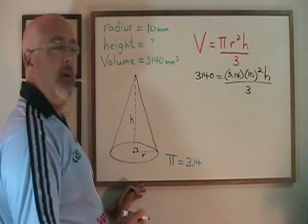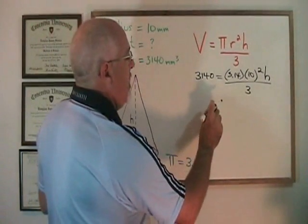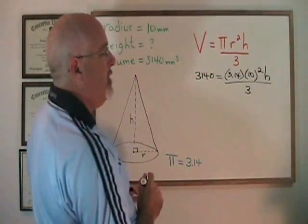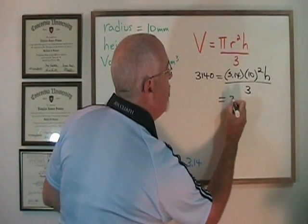And now we only have one unknown, which is the h. 10 squared is 100, and 3.14 times 100 is going to be 314.